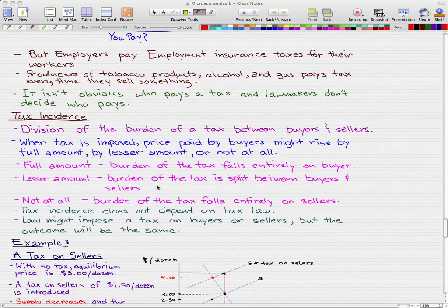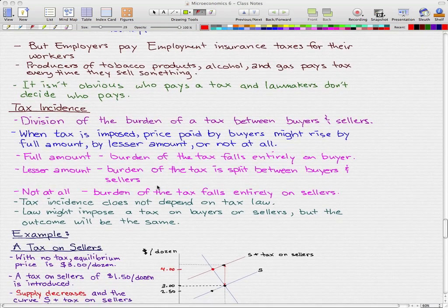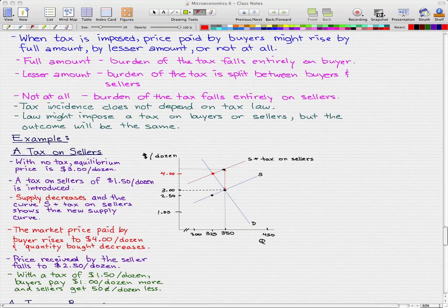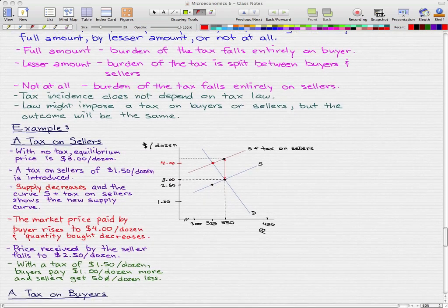Now tax incidence does not depend on tax law. Laws might impose a tax on buyers or sellers, but the outcome will be the same. This example will be a tax on sellers.